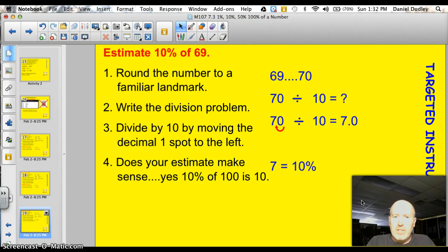Estimate 10% of 69. Well, we do the same thing here. We round to a familiar landmark. So, I took 69 and I rounded it to 70. And I want to know what 10% is, so I divide it by 10. 70 divided by 10. Well, I don't have a calculator, but I know that dividing by 10, or just like dividing by 100, I can move the decimal. So, to divide by 10, I move the decimal one spot to the left. And I get 7, or 7.0. So, 7 equals 10%. Does this estimate make sense? Well, yes, it does, because 10% of 100 is 10. So, 10% of 70, 7 makes total sense.